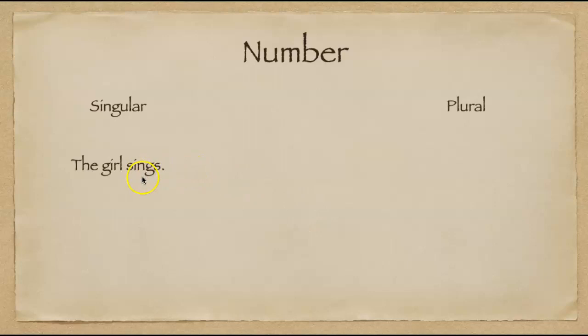The girl sings. Now a common mistake that a lot of people will make is that this s here makes this verb plural. That is quite to the contrary. This is a singular verb. This exhibits what we would call subject verb agreement. Both the subject and the verb are singular.